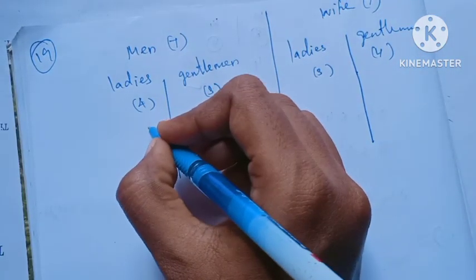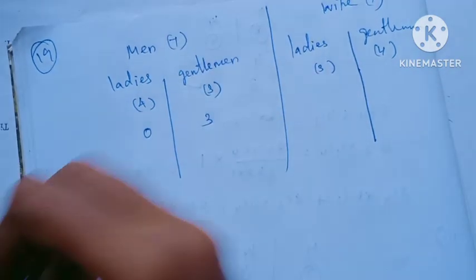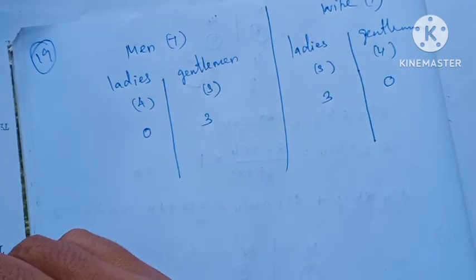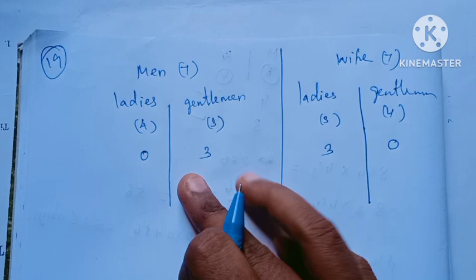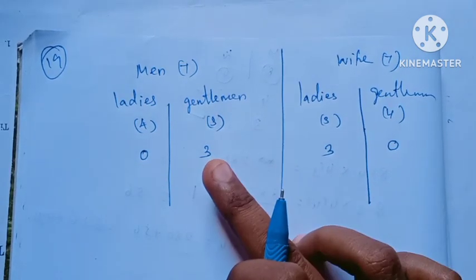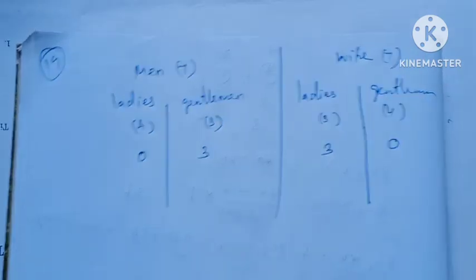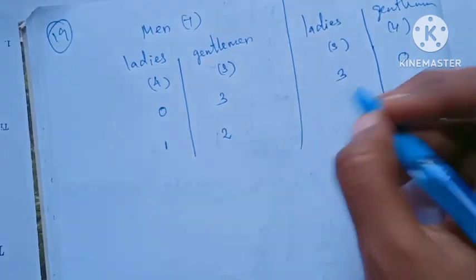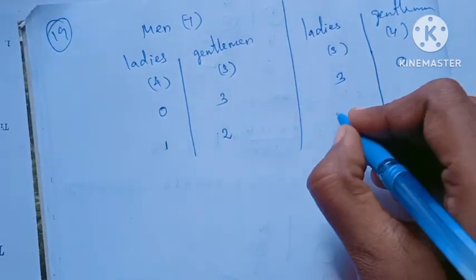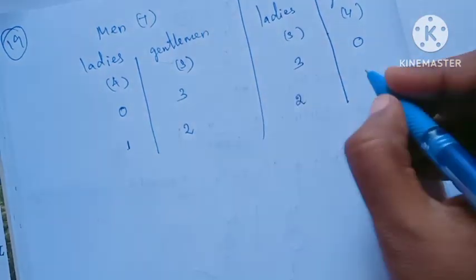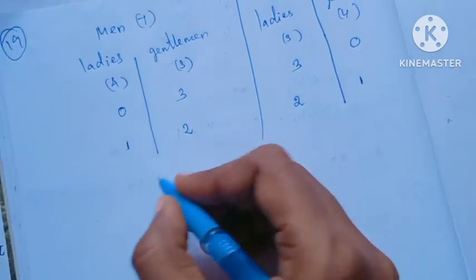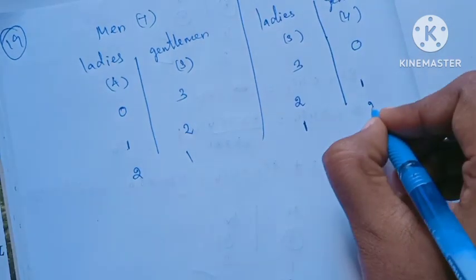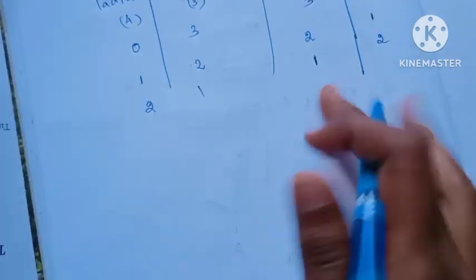What we are going to do is: first, select 3 ladies and 3 gentlemen. The cases are — 3 ladies from men's side and 0 from wife's; 2 ladies and 1 gentleman; 1 lady and 2 gentlemen; 0 ladies and 3 gentlemen. Each case pairs ladies and gentlemen selections from both sets of relatives accordingly.